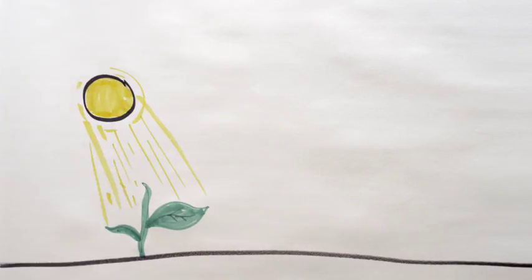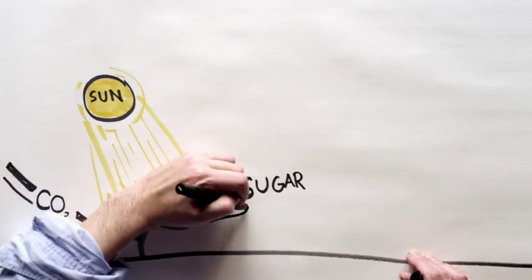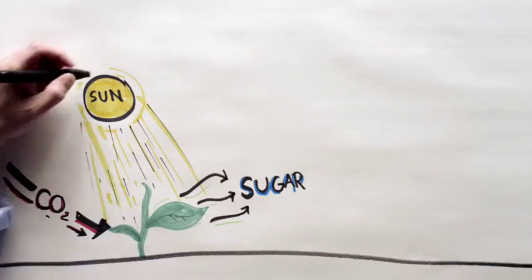Plants do this every day. They take in carbon dioxide, UV light, and they make a long-chain sugar molecule.